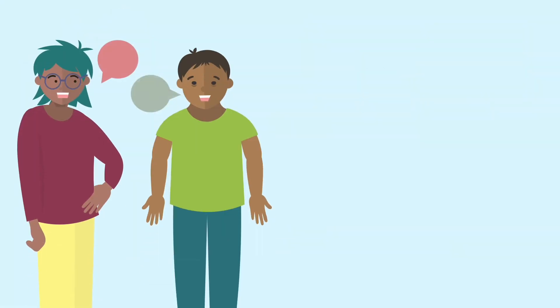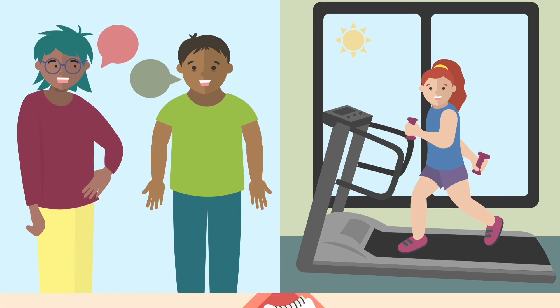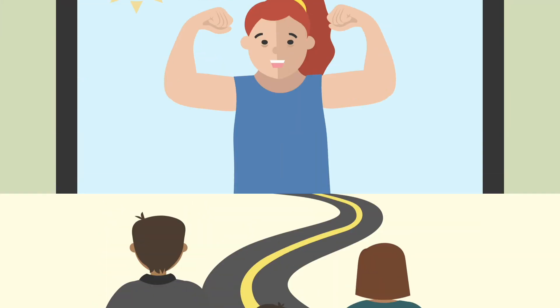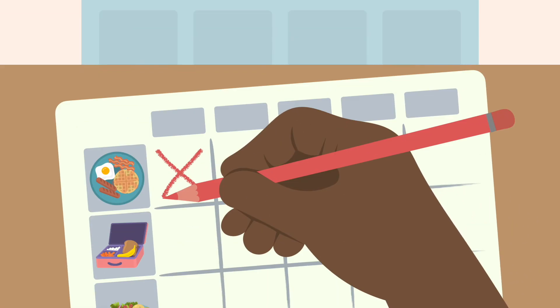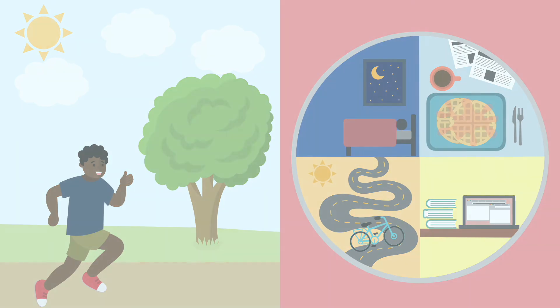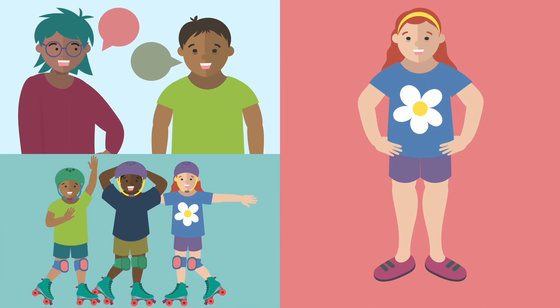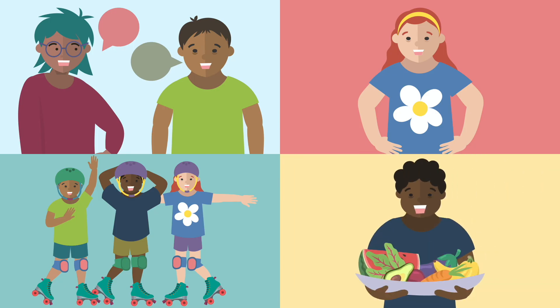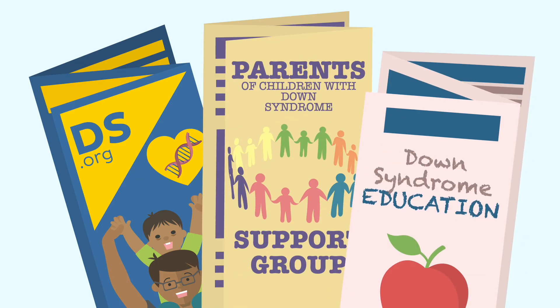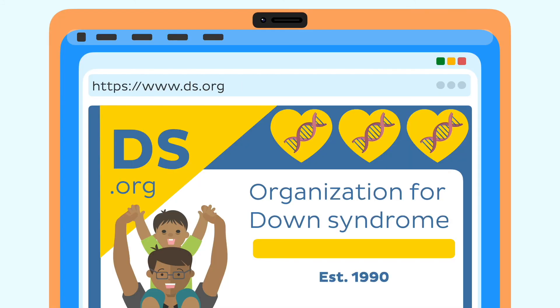Get them involved in group activities like sports or clubs so they can make friends and practice social skills. Be patient and supportive as they navigate the social world and offer guidance when needed. To help them stay healthy, get them involved in meal planning and cooking, encourage a balanced diet, and make sure physical activity is part of their daily routine. By focusing on communication, independence, social skills, and a healthy lifestyle, you'll be making a big difference. If you want extra help, check out organisations, support groups, and educational programs in your community, as well as reliable resources from Down syndrome organisations online.